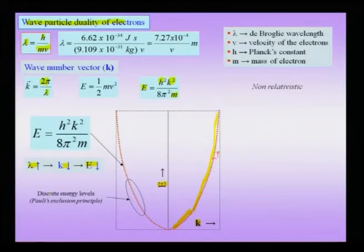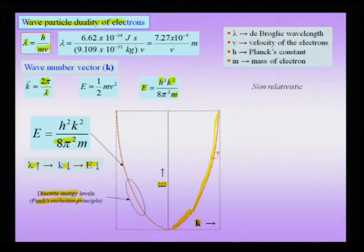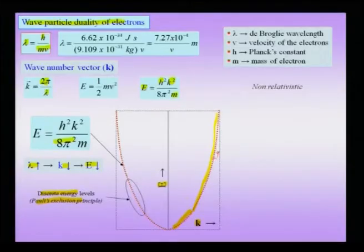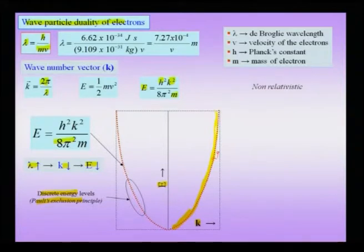These energy levels, though appearing continuous from the equation, are actually slightly discrete because of Pauli's exclusion principle, which states that no two electrons can have the same set of quantum numbers. If you look closely, there may be slowly and closely spaced electron levels, but for now we will assume they are continuous. Therefore, there is a series of levels available for the electron to occupy.